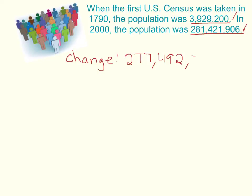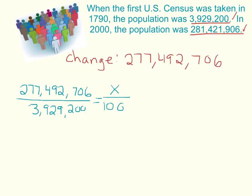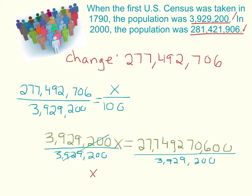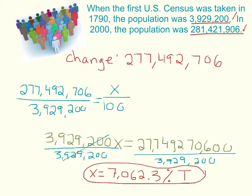The change is 277,492,706. We take that, divide it by the original, and set up our proportion to find the percentage. Cross multiply to solve for x, then divide. You should get that x equals about 7,062.3. So our population increased by over 7,000%, and obviously it's an increase — that's our percent of change in population from 1790 to 2000.